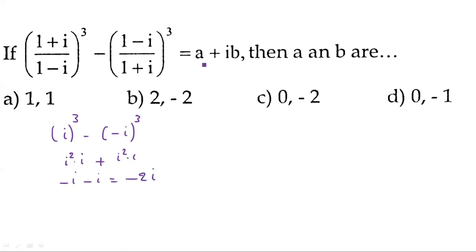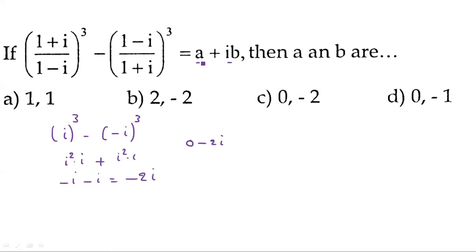So we have -i - (-i) ... simplifying: -i minus -(-i) = -i - i = -2i. So the value is 0 - 2i, meaning a = 0 and b = -2.